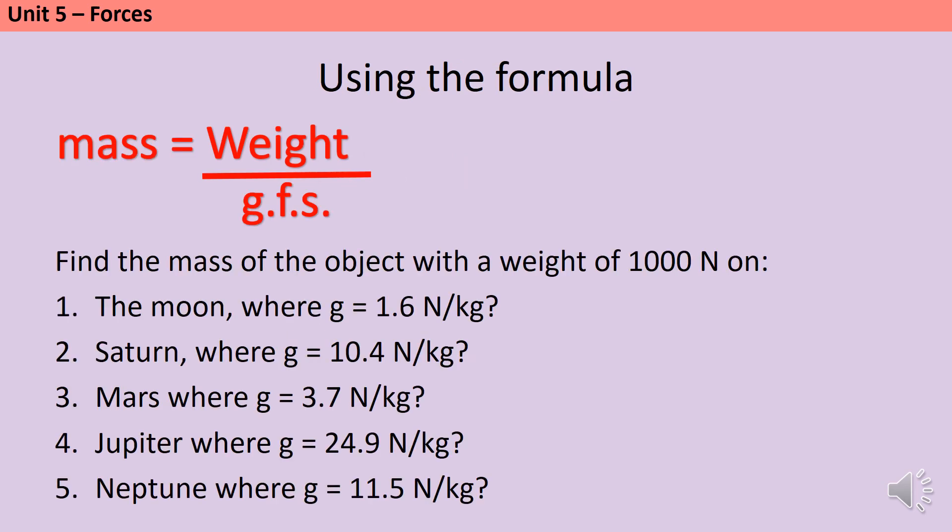Now that I have my rearranged equation, I'm ready to start calculating. So in these questions, I have a weight of 1,000 newtons, and I'm given the gravitational field strength of the planet or the satellite, and I need to work out what the mass of the object will be. So now I know that mass is weight divided by gravitational field strength. So for question one, the weight is 1,000 newtons, which is given to me in the question. And here we've been quite nice and said a weight of 1,000 newtons. But if they didn't tell you that that number was the weight, you could work it out based on the units. So I'm going to do 1,000 newtons divided by my gravitational field strength of 1.6 newtons per kilogram. And that gives me a mass of 625 kilograms. Pause the video and do the other four questions yourself.